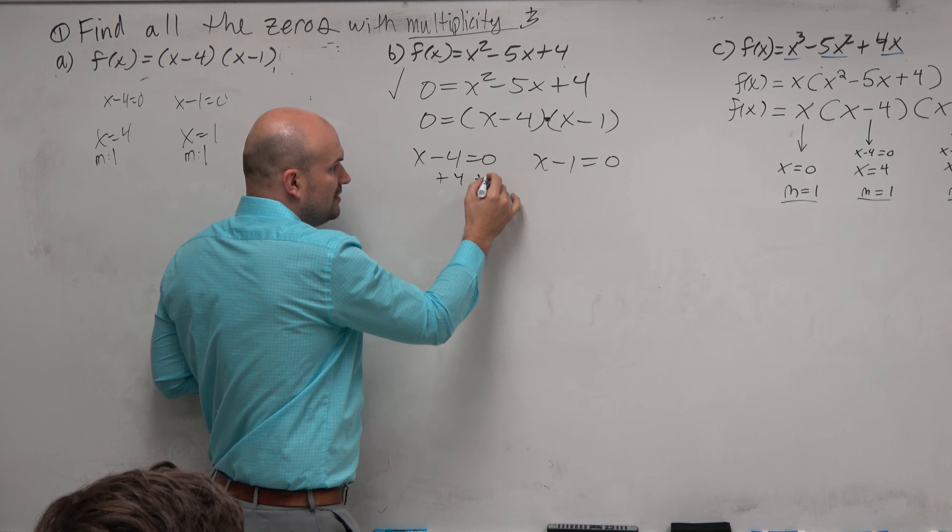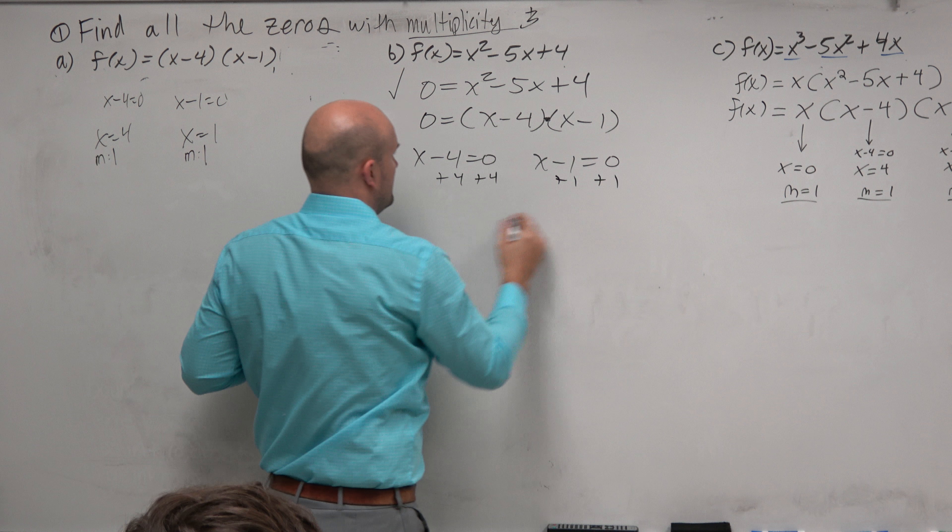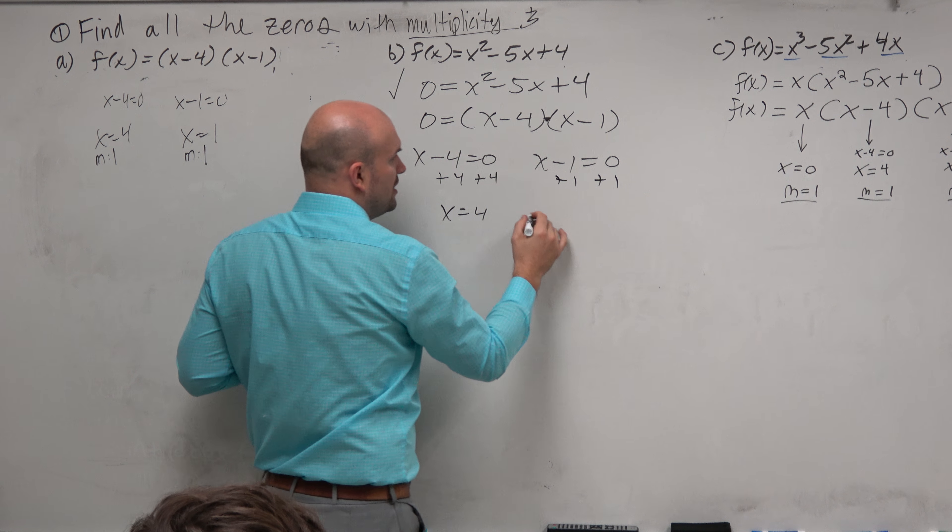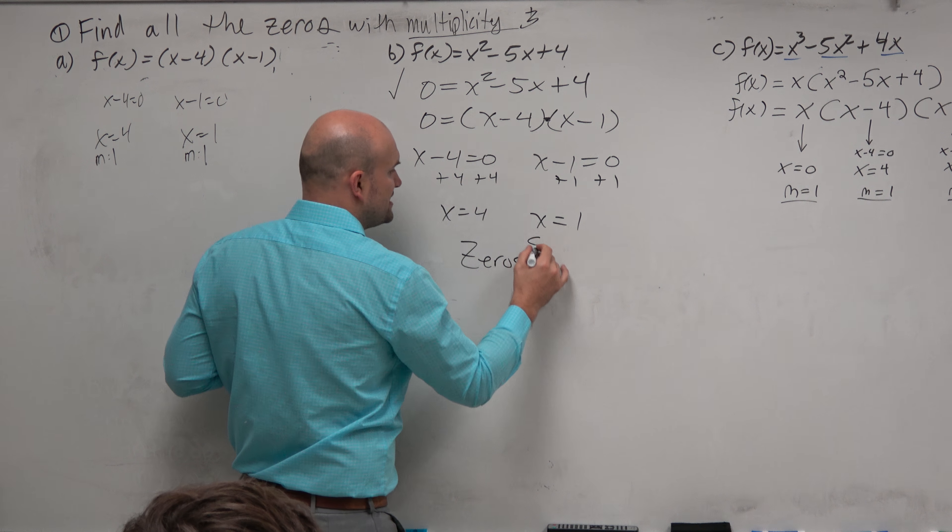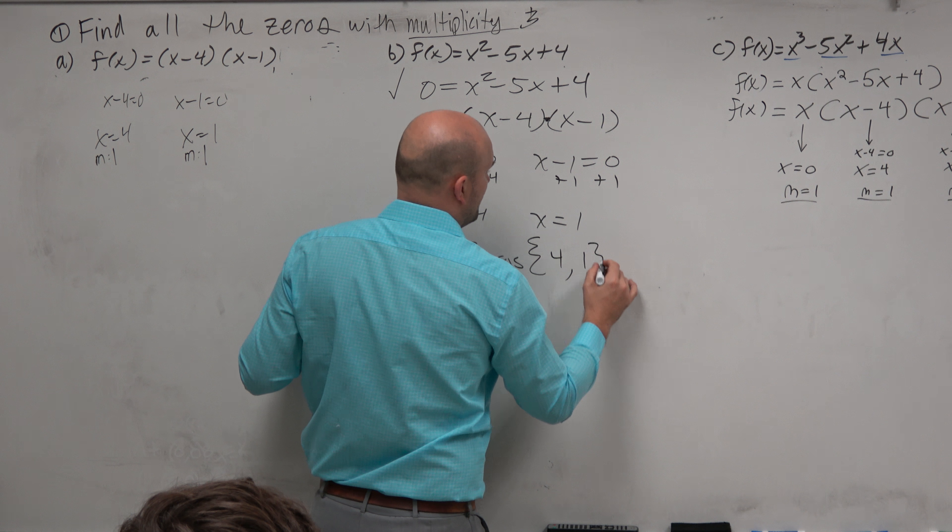And then, obviously, you can just solve here. And I can say x is equal to 4 and x is equal to 1. Therefore, I can write the zeros in set notation, 4 comma 1.